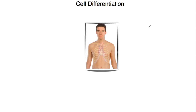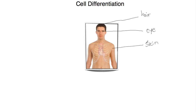Let's take a look at cell differentiation. We know that multicellular organisms are made up of many different types of cells — for example, hair cells, eye cells, skin cells, bone cells, and heart cells. The question is: how do these cells become different from each other?